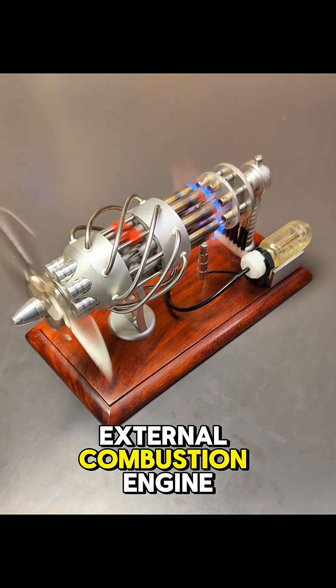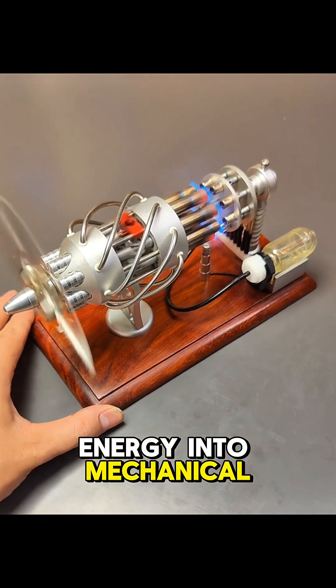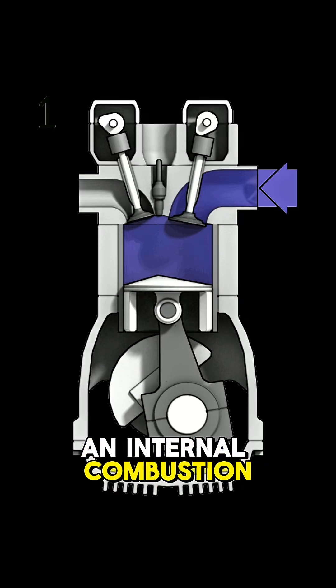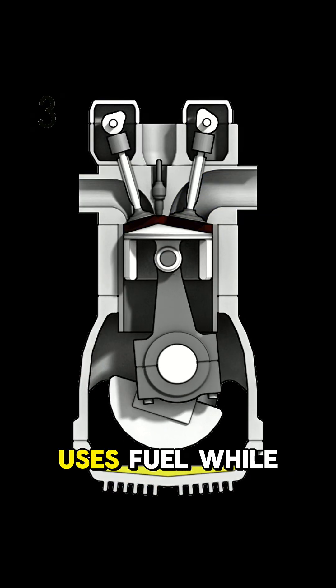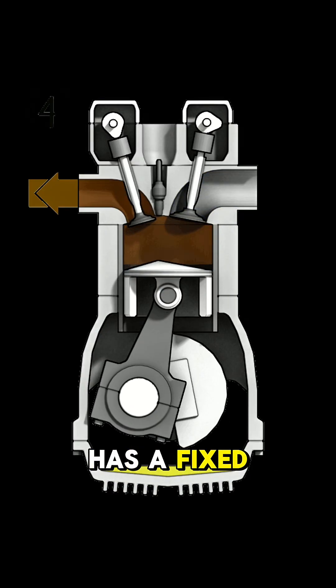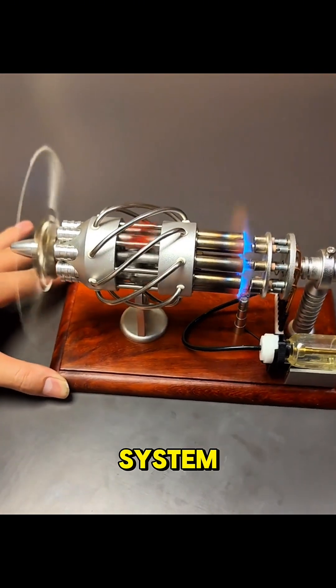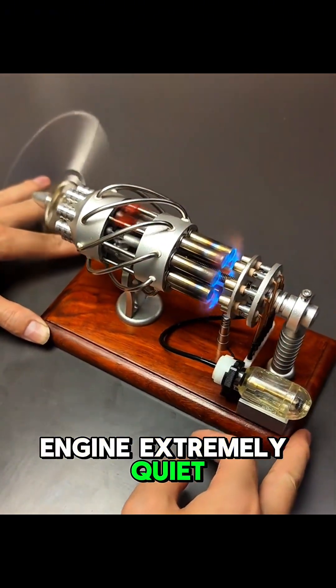This is an external combustion engine which converts heat energy into mechanical energy. An internal combustion engine, for example your car, uses fuel while the Stirling engine has a fixed amount of gas within a closed system. This makes the engine extremely quiet and efficient.